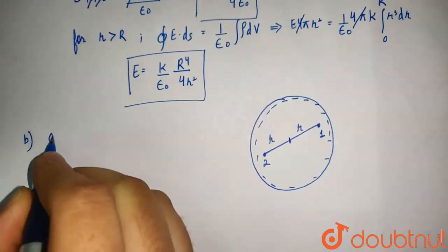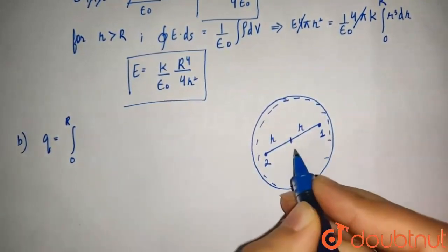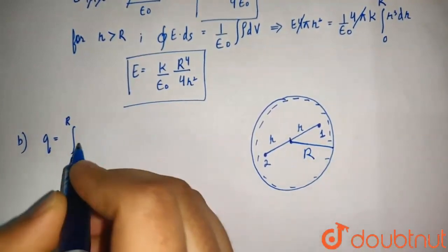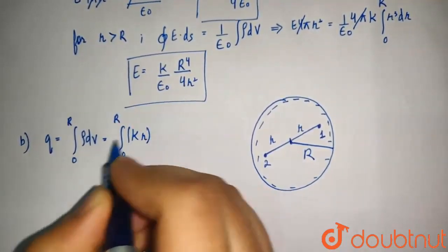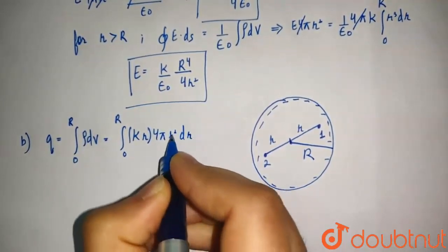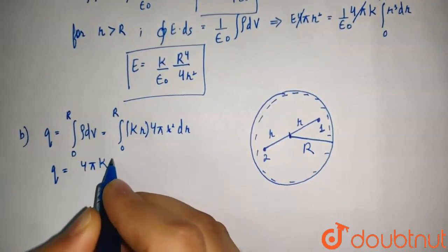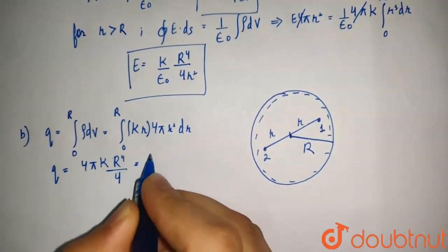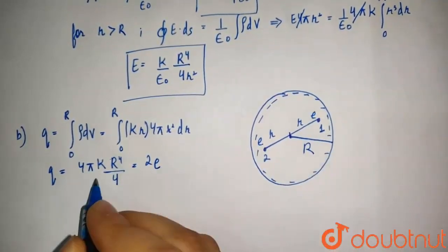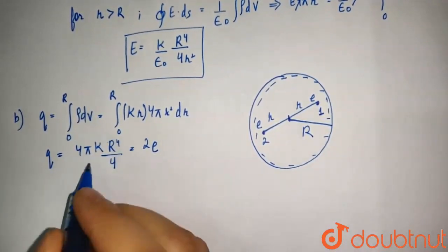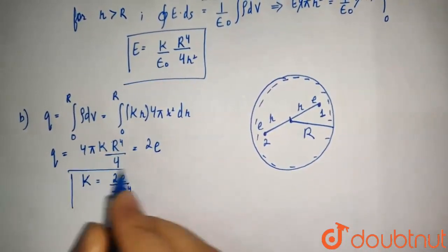For part B, the total charge enclosed from 0 to R gives Q equals the integral from 0 to R of kr times 4 pi r squared dr, which gives Q equals 4 pi k times R to the power 4 over 4, and this equals 2e. From this, we can calculate k: k equals 2e over pi R to the power 4.